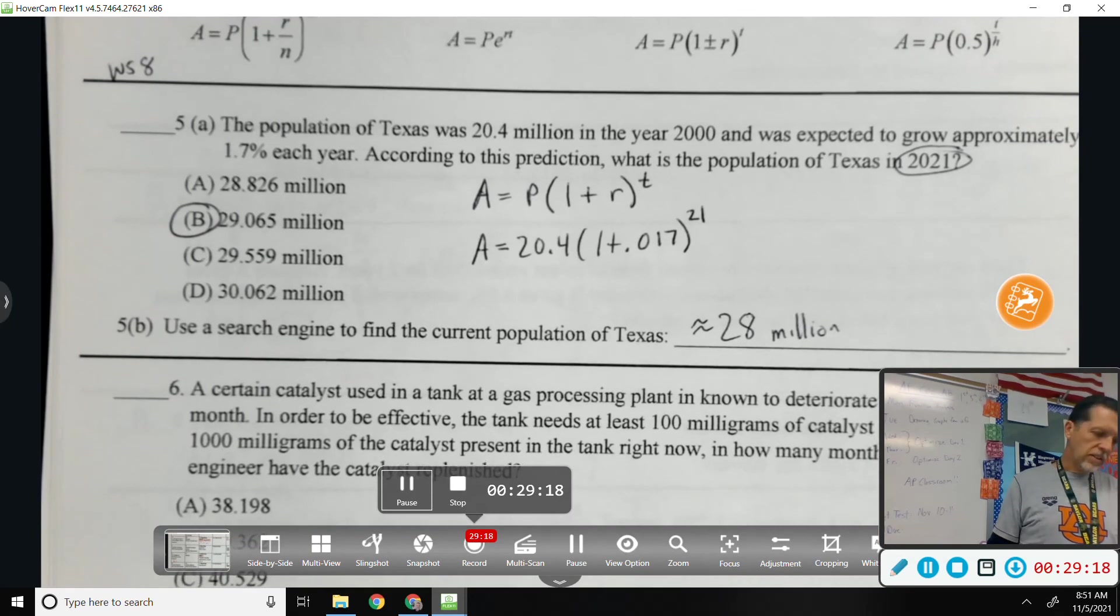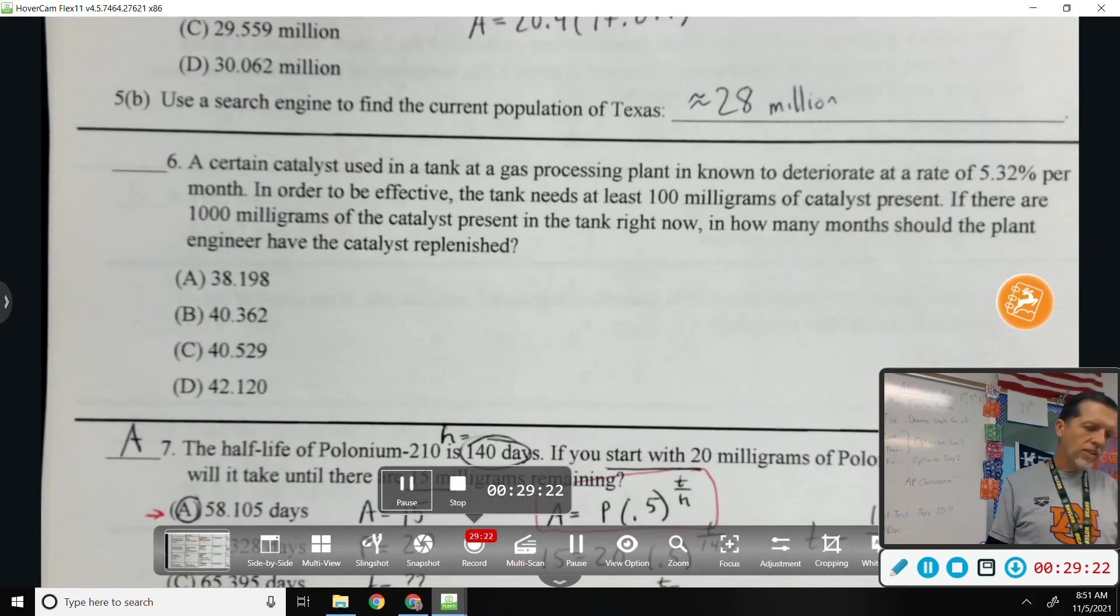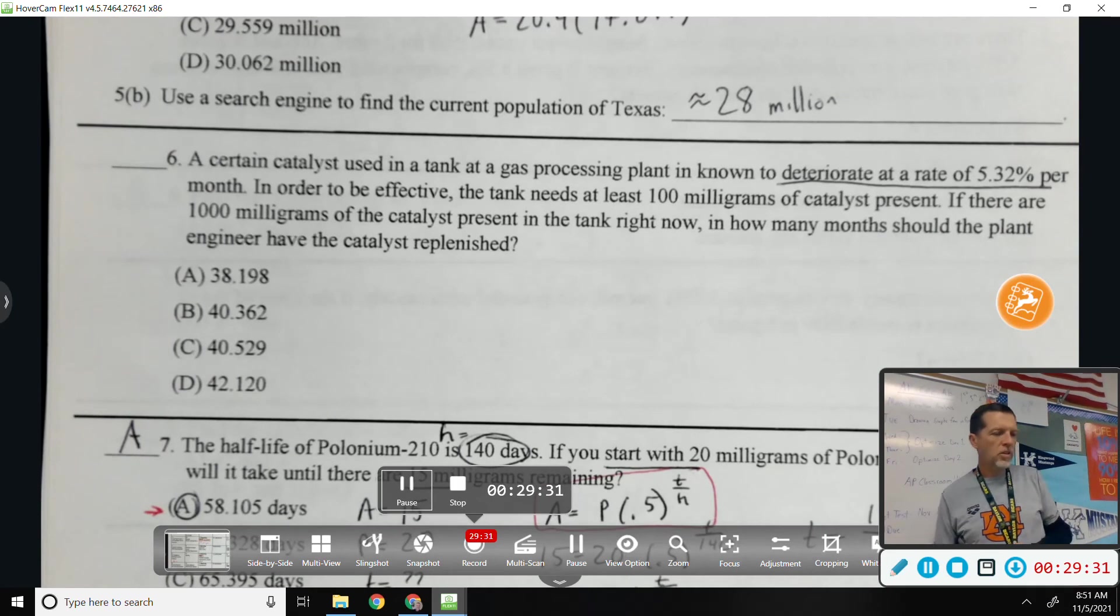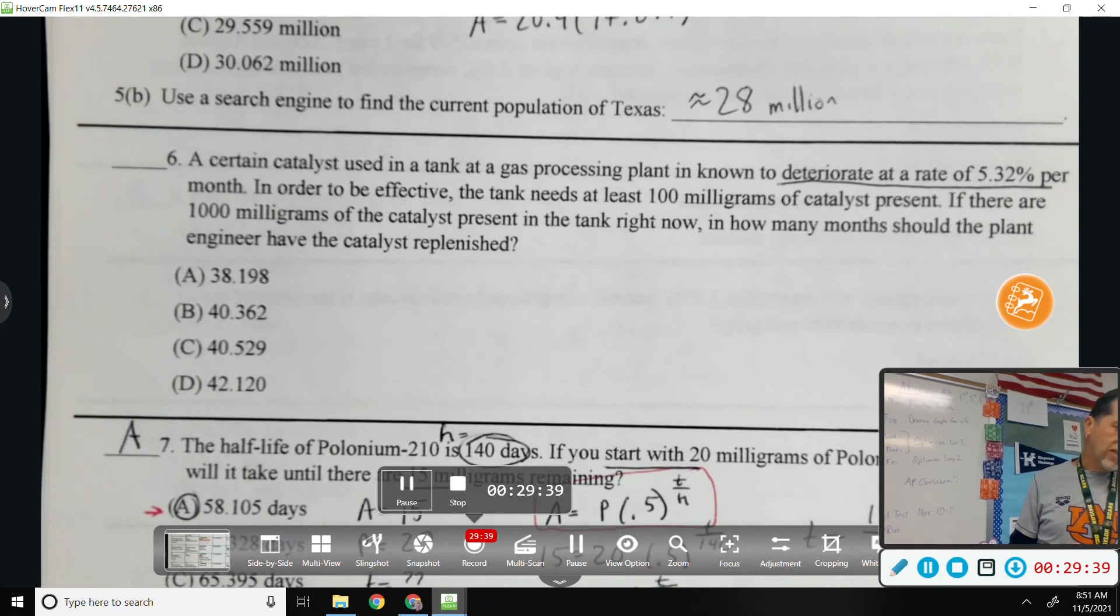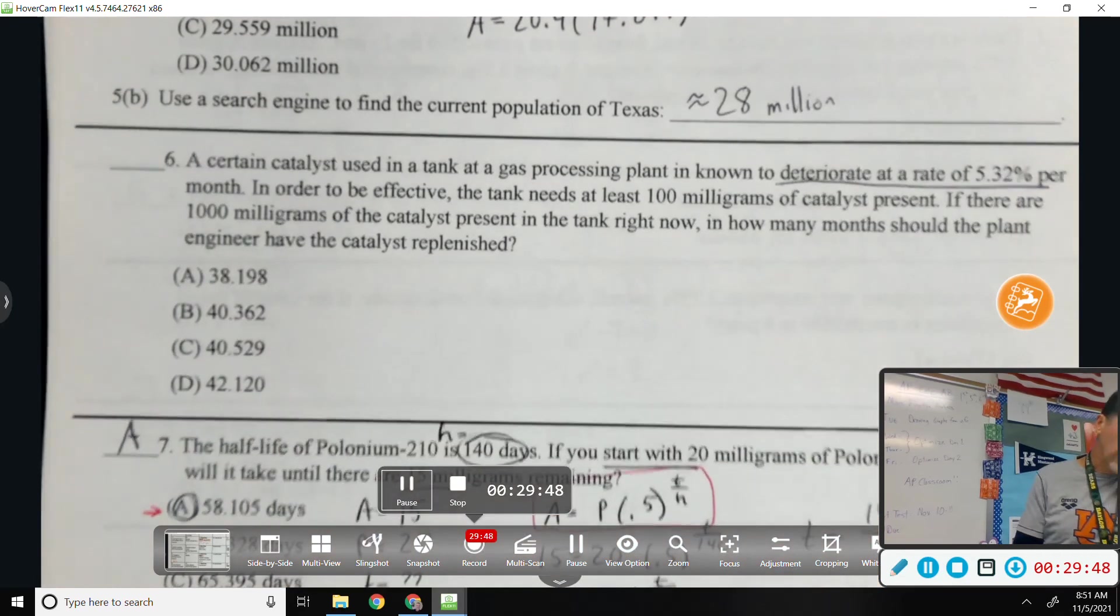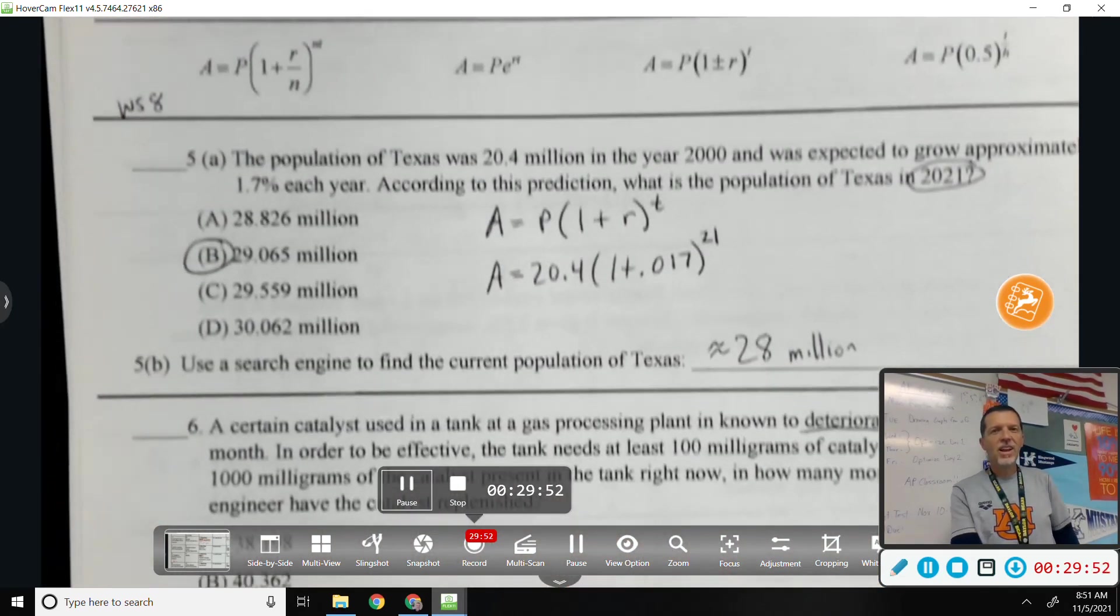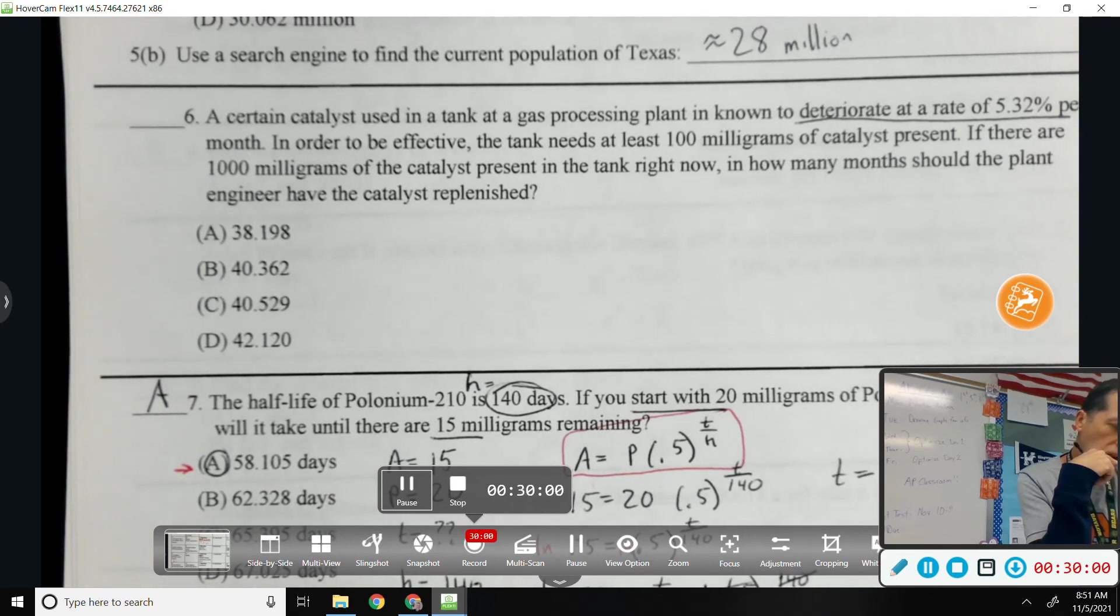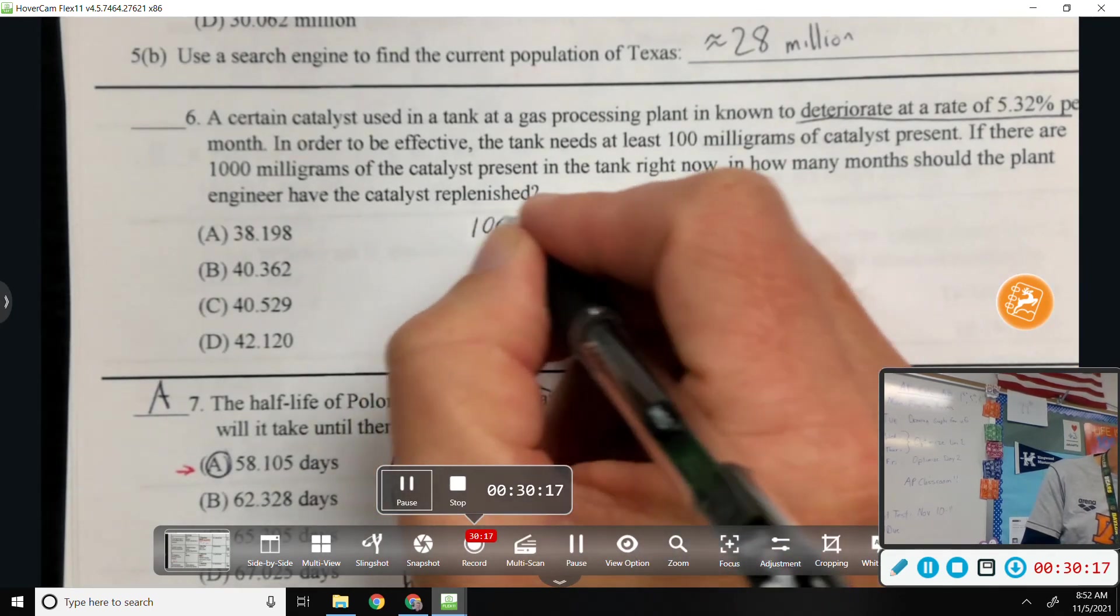Number six. A certain catalyst used in a tank at a gas processing plant, does sound like chemistry, is known to deteriorate, decay at a rate of 5.32% per month. Oh, this is tricky, because the per month. In order to be effective, the tank needs at least 100 milligrams of each catalyst present. If there are 1,000 milligrams in the tank right now, how many months should the plant engineer have the catalyst replenished? Which equation are we talking about here? I think I'd go the first one, because it's the monthly thing. Although, oh, this is tricky. If I use the first one, time's going to be in years. If I use the third one, I can use time in months. Either one will work. Either one will work. So, I think the third one's probably the way to go.